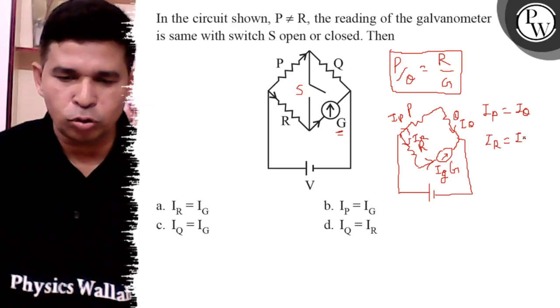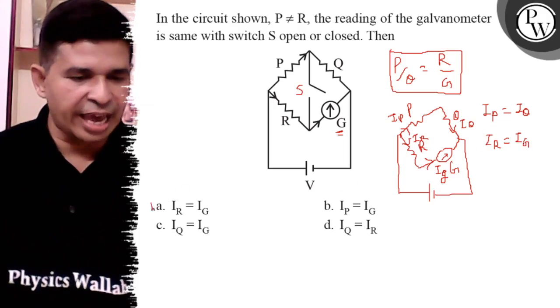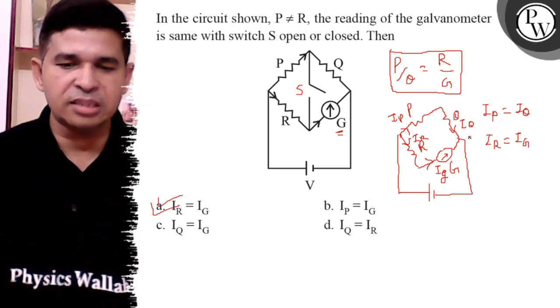These are the two options, but which is the best which is given in answer? It is A: Ir is equal to Ig.